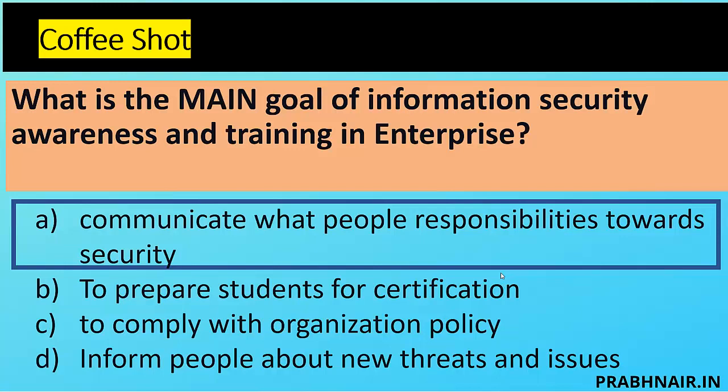A recent real-world example: many people are receiving suspicious WhatsApp calls. In an awareness workshop, we explain this new threat so people take responsibility. Their responsibility is: if they find something suspicious, report the incident to the incident management team. That's why the answer is A — communicate people's responsibilities toward security.